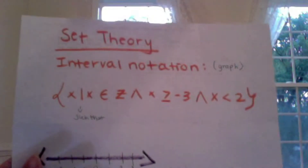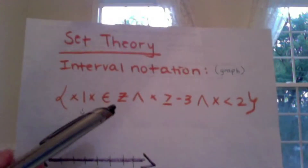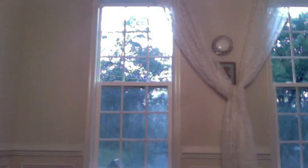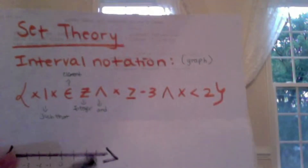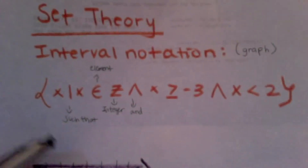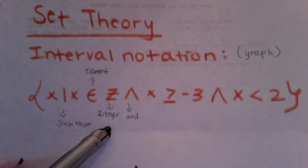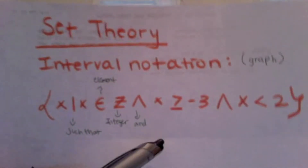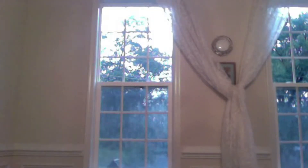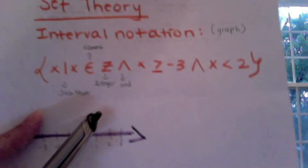So X such that X is an element of integers — Z means integer, and this e-looking figure means 'element.' This upside-down V is an 'and' symbol. So: Z is an integer, the upside-down V is 'and,' the e-looking figure is 'element,' and the line is 'such that.' So: X such that X is an element of integers, and X is greater than or equal to negative 3 and X is less than 2. Mathematicians don't like to put things in long sentences, so we made up a little code called set builder notation.